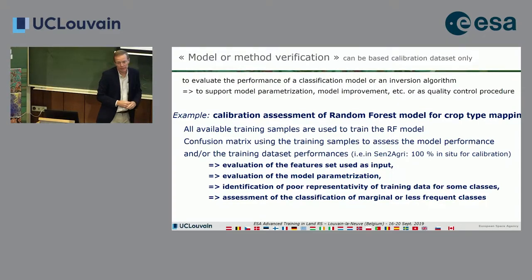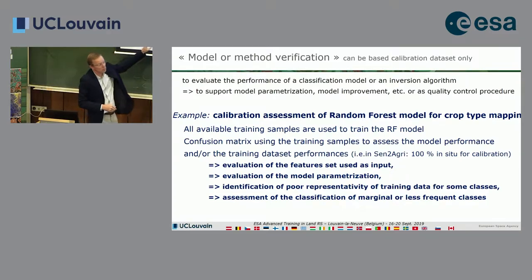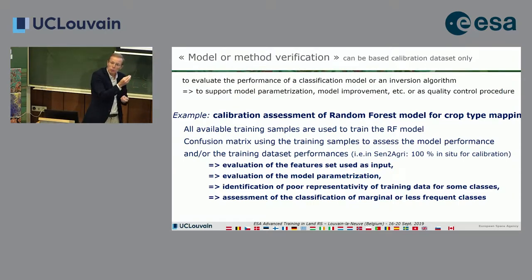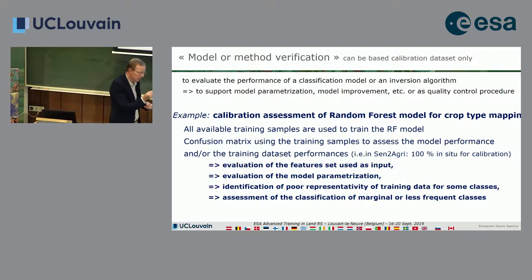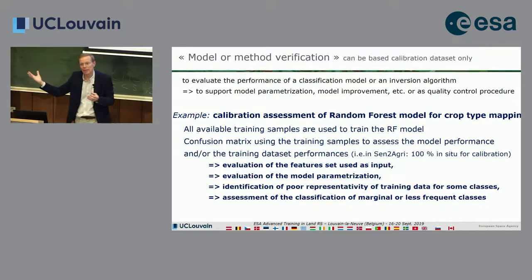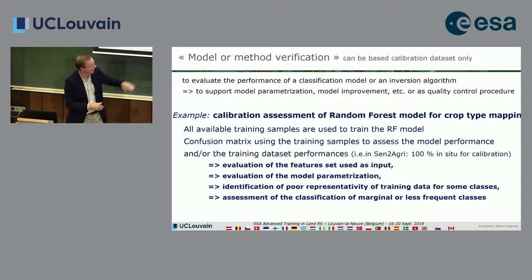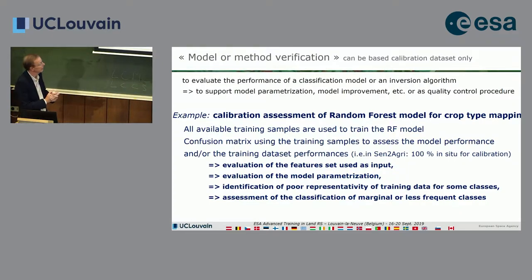This allows you to assess the performance of the model with regard to your calibration dataset only. You can figure out if you have the right features, the right model parametrization—more trees, depth of trees—and assess the quality of representativeness of the training dataset. For instance, you might find that minor crops are too rare in the calibration dataset to appear in the results, or that even for major crops the representativity is not good enough.